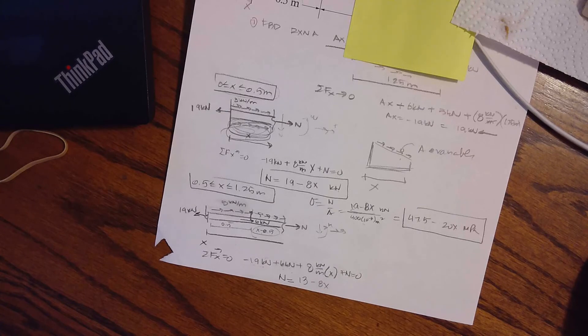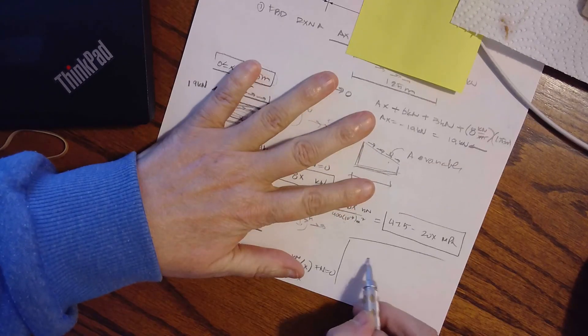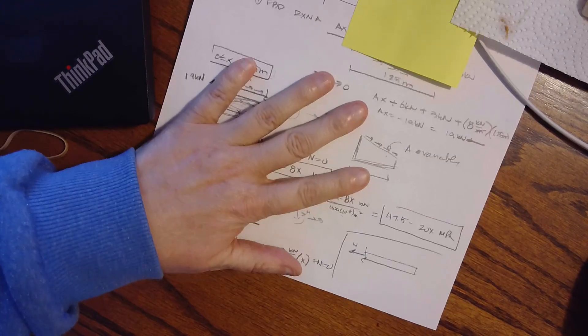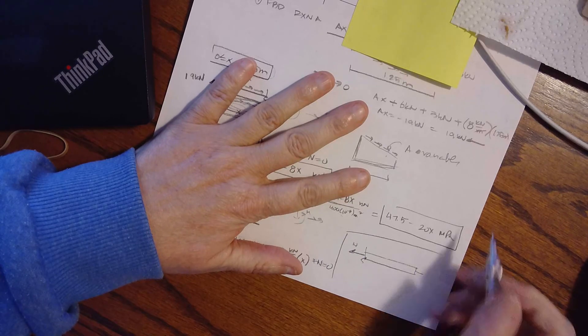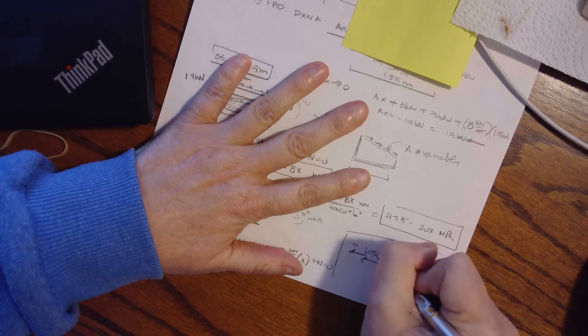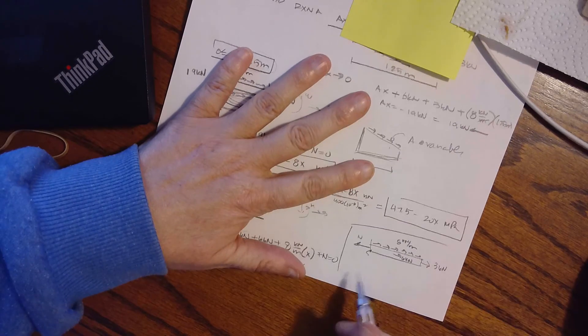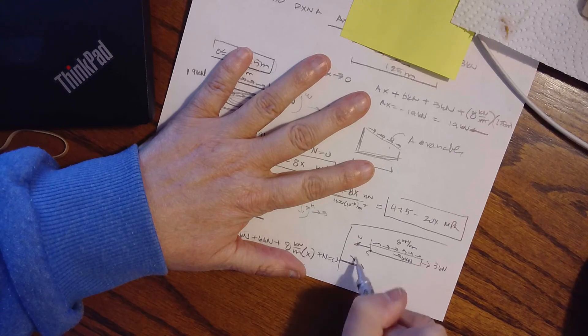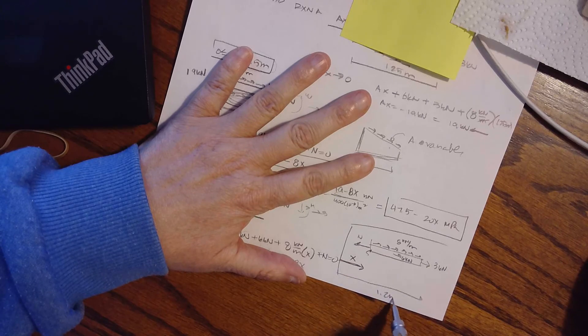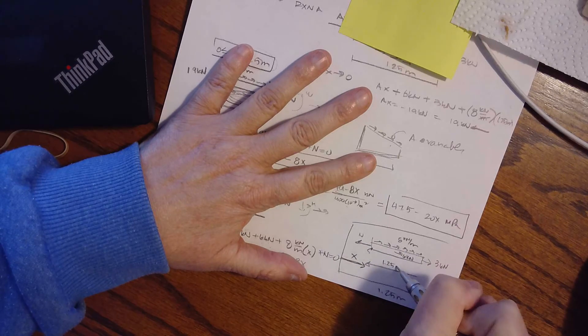Anyways, that's how you would set it up. If you wanted to come from the right side, if you didn't want to find that reaction, then you could draw this from the right. There's that internal normal force. And I would have external, I would have the 3 kilonewtons and the 6 kilonewtons. And I would have this 8 kilonewtons per meter. X always starts way back here at the wall. So that's X. If that's X and the whole thing is 1.25 meters, then I know that this distance has to be 1.25 minus X.